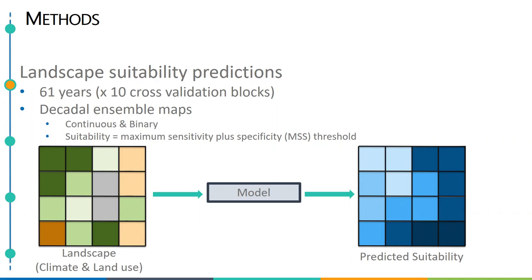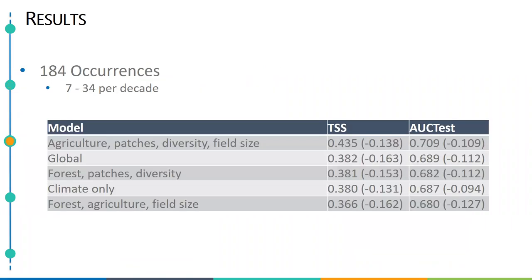In the end, we wound up with 184 eastern spotted skunk records in our database, amounting to between seven and 34 skunk locations per decade. Our model suggested that incorporating land use data in addition to climate data improved model fit, with the model containing all climate variables plus the amount of land in agriculture, the number of patches, landscape diversity, and average field size performing the best.